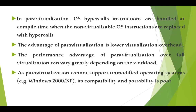Examples of para virtualization include Xen, Oracle VM for x86, and IBM. The limitation of para virtualization is that it cannot support unmodified operating systems that are not compatible with the hypervisor, because each time you upload an operating system you must also upload its driver to enable communication to the hypervisor layer.